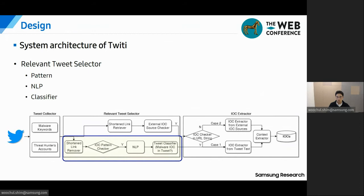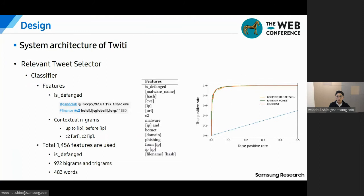Since shortened URLs make too many noises, Twitty removes shortened links and checks if there is at least one IOC pattern in the tweet text. Tweet examples not related to malware hashes need to be dropped, so we need a classifier that tells whether malicious IOCs are in the tweet or not. As initial features, we consider defanged IOCs, which prevent damage from unintended clicks — a crucial hint for expressing IOCs. We also consider contextual n-grams. After feature selection, 1,456 features were retained. This graph shows ROC curves of logistic regression, random forest, and XGBoost classifiers, and they all show good enough performance.